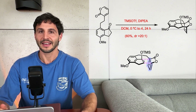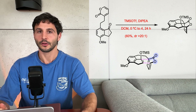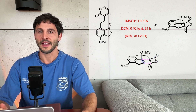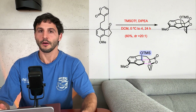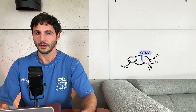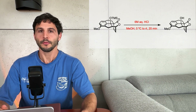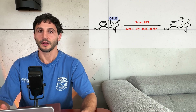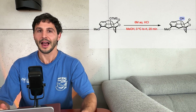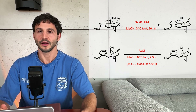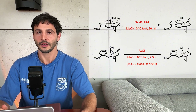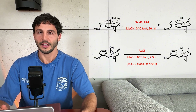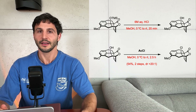In this type of reaction, the diene is electron-poor due to the presence of an electron-withdrawing group, while the dienophile is electron-rich due to the presence of an electron-donating group. The next step involves cleaving the TMS ether to produce the tertiary alcohol, which is then converted into an alkyl chloride using anhydrous hydrogen chloride. The acid is generated in situ from acetyl chloride and methanol.